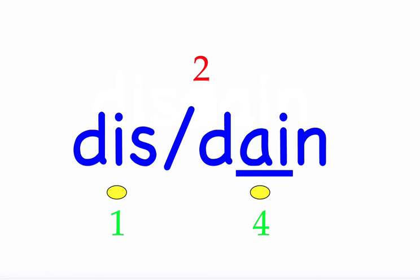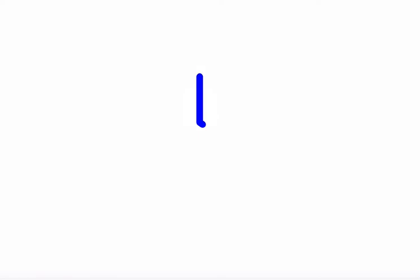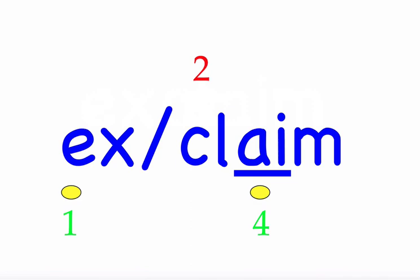Row eight. The first word is 'exclaim.' I will exclaim my opinion soon. First syllable 'ex' — two sounds, E-X. Second syllable 'claim' — four sounds, C-L-A-I-M. Mark the word. Exclaim.